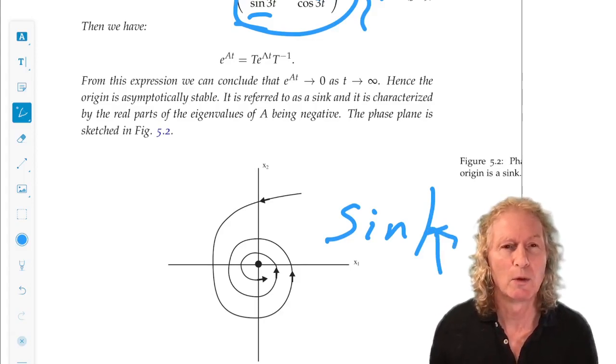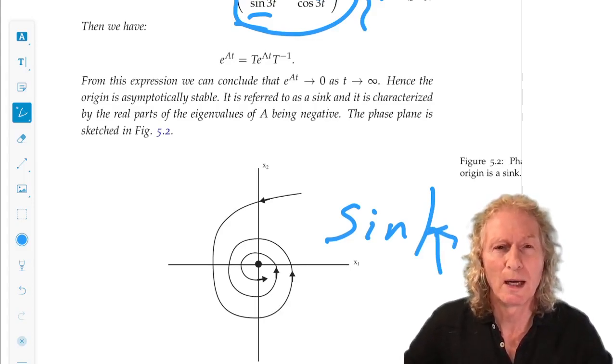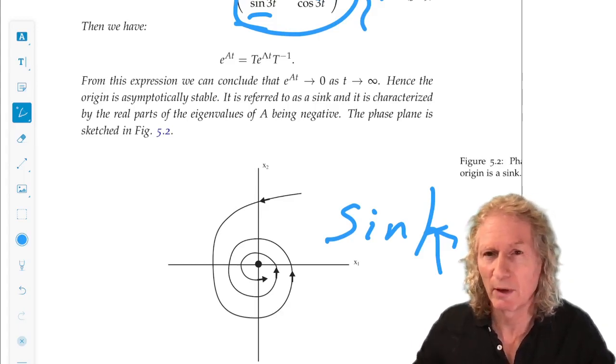And, in the next example, I will look at what happens when the eigenvalues are both real, they're different, but they have opposite signs.